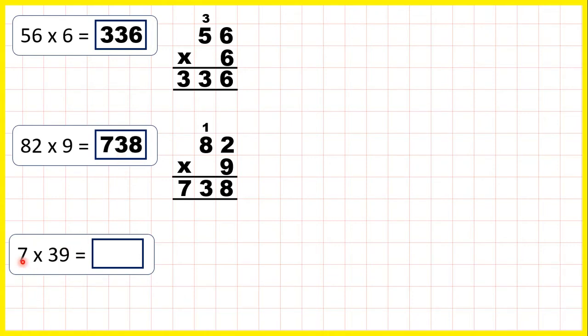Now here we have 7 times 39. So although the question is written with our single digit number first, we do exactly the same thing as we did with these questions above. We write the two-digit number on top. So always with column multiplication, write the number with the most digits on top, and we can do that because with multiplication, order doesn't matter.